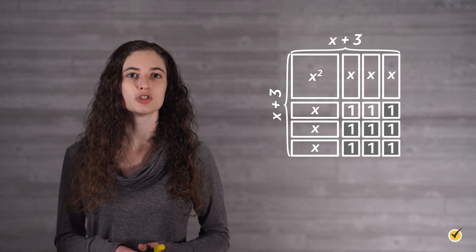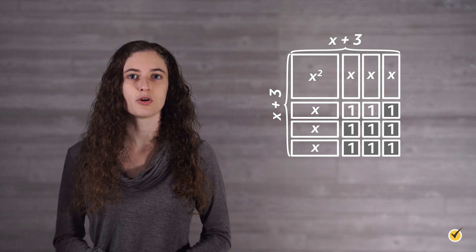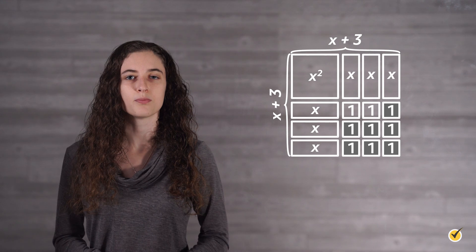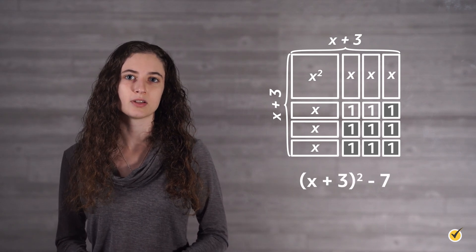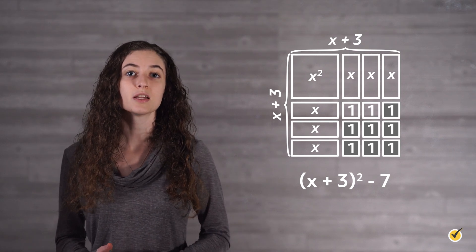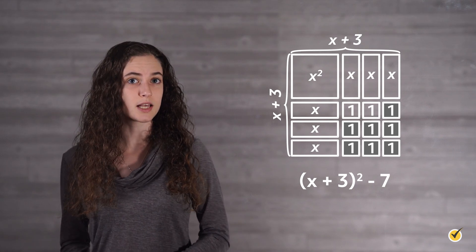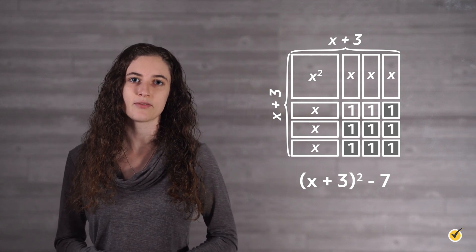We have created a perfect square. But now we have to account for the 7 ones that we had to add in order to complete the square. Fortunately, it is a simple adjustment of subtracting the 7 ones from the squared binomial. So we would add 7 to create a perfect square, but then subtract 7 to keep the expressions equivalent. The result is the vertex form of the quadratic expression: x plus 3 squared minus 7.